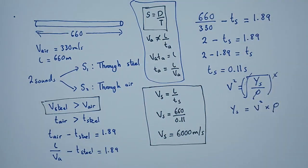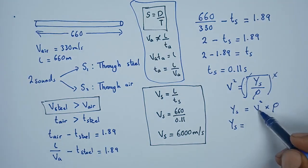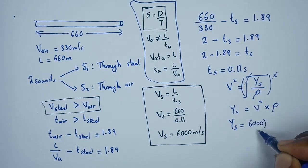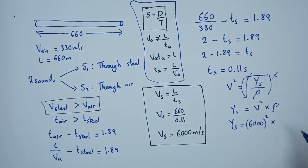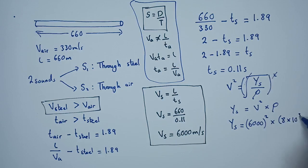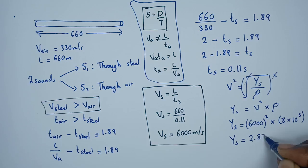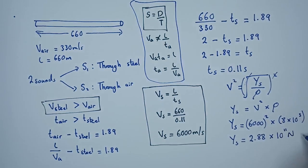Squaring both sides: V² = Y_s / ρ, so Y_s = V² × ρ. Substituting our values: Y_s = (6000)² × (8×10³). Performing the multiplication, we get Y_s = 2.88×10¹¹ newtons per square meter. That's the bulk modulus of elasticity of this steel.